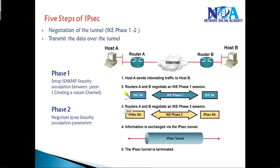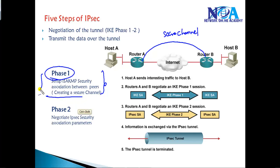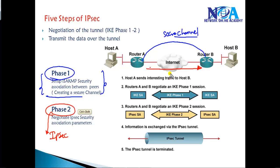The second step is IKE Phase 1 and the third step is Phase 2. The major difference is that Phase 1 establishes a secure channel between the two devices using IKE policies. Phase 2 then negotiates the IPSec protocol parameters needed to provide secure communication. The actual applying of IPSec security policies is done in Phase 2, but Phase 1 must complete successfully first.